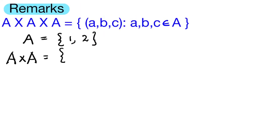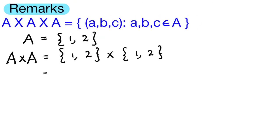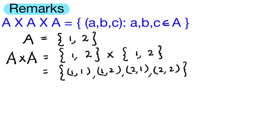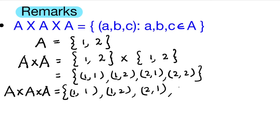Cartesian product of set A and set A, or A cross A, is equal to the set of all ordered pairs: (1,1), (1,2), (2,1), (2,2). Now let us find A cross A cross A, that is the Cartesian product of set A cross A and set A.